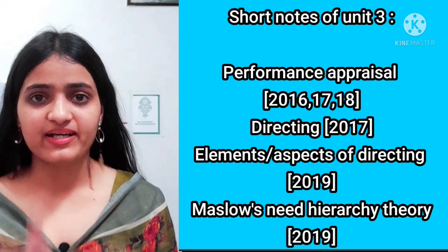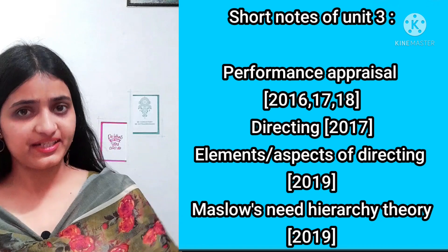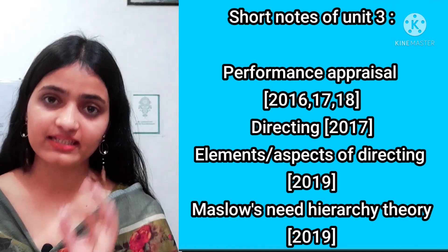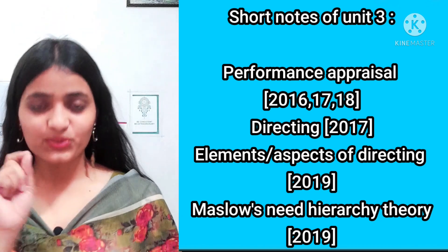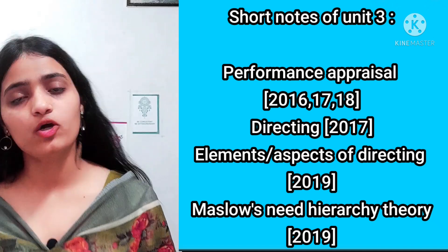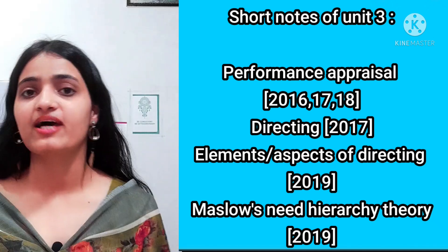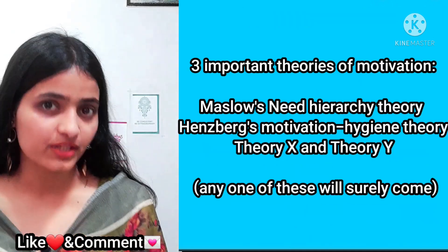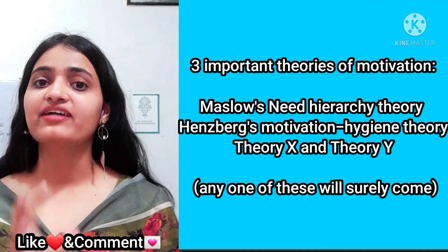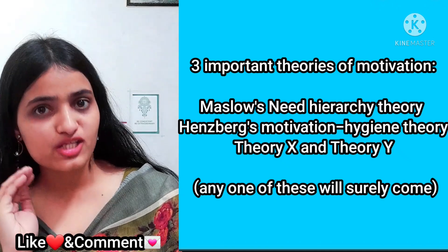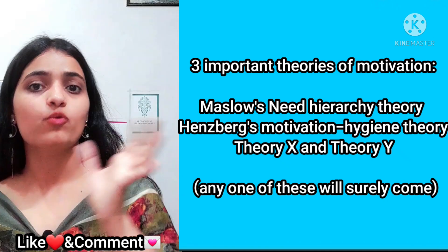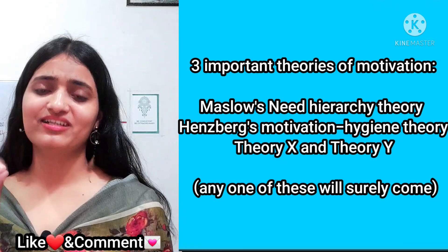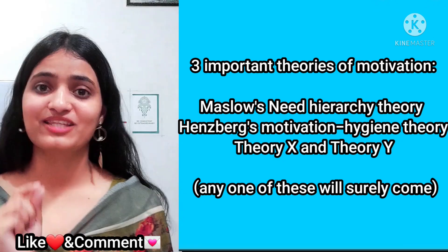Directing aspects or elements came in 2019. Maslow's Need Hierarchy Theory came in 2019 in both short and long form. So Maslow's Need Hierarchy Theory, Herzberg's Two-Factor Motivation Theory, and Theory X and Y — three theories have been studied with tips and tricks.